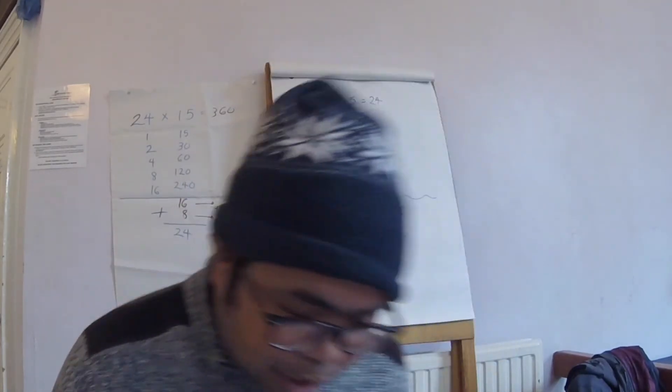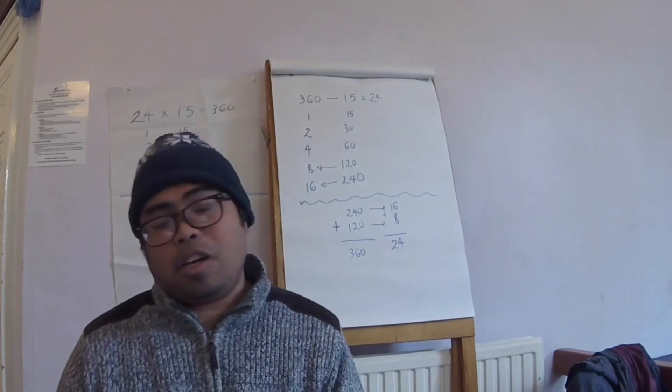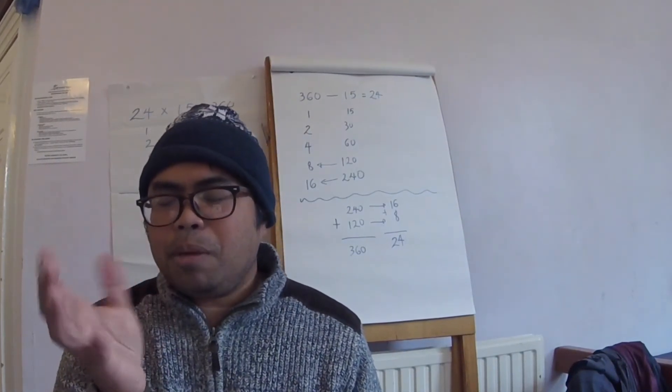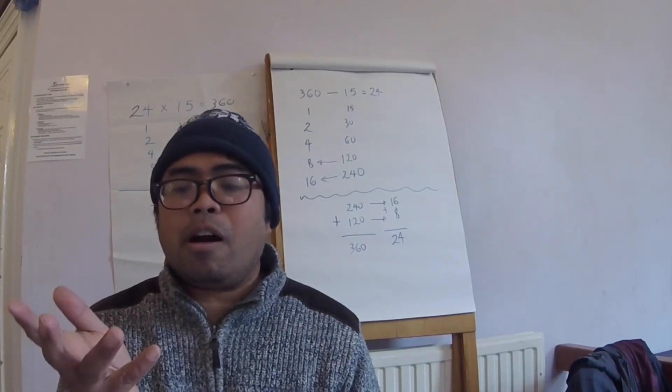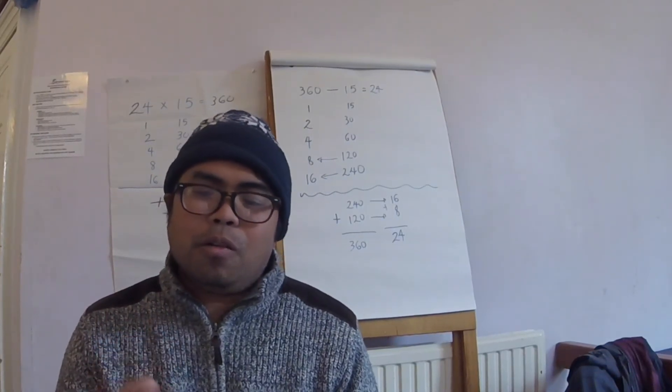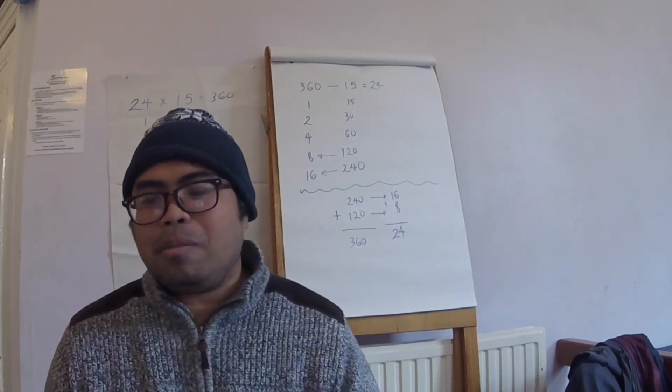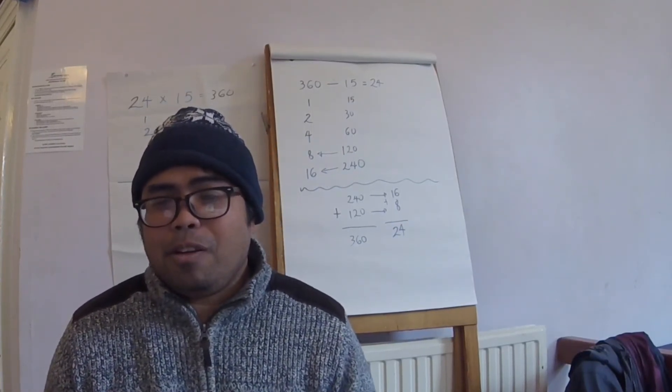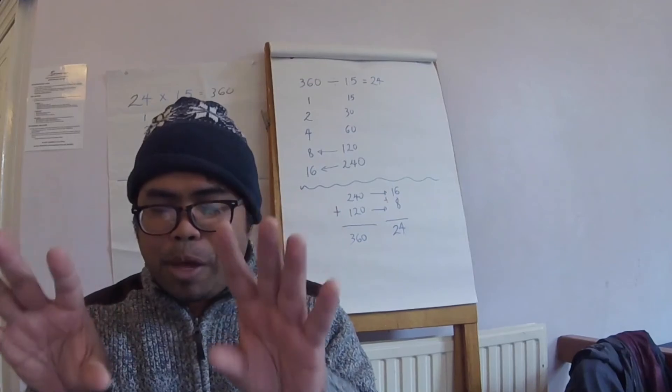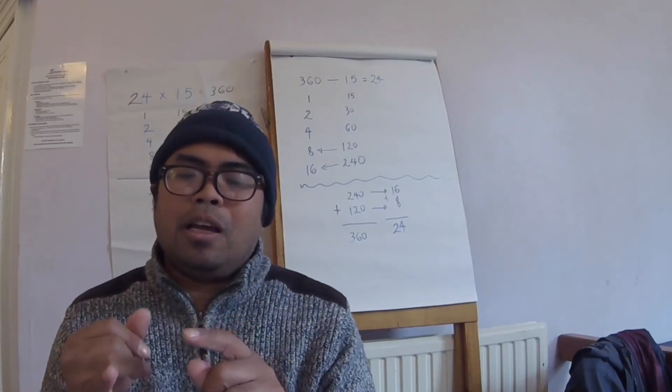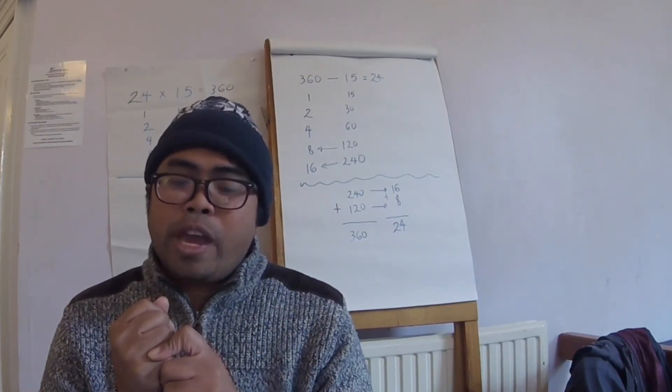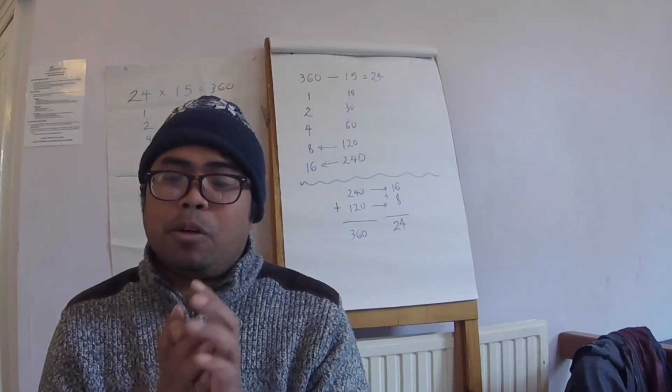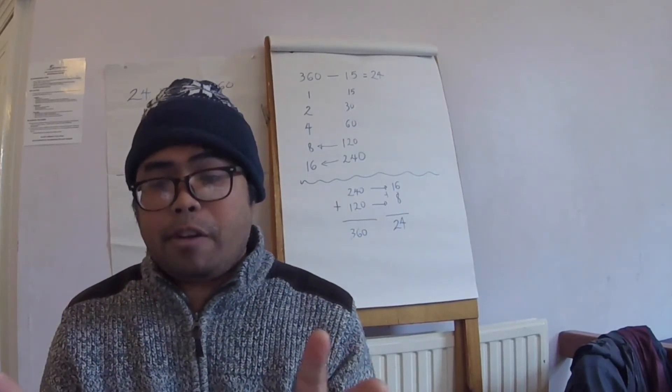And so in ancient Egypt, division is the mirror of multiplication. Now how do you compare that to the modern methods? If you look at how it looks on paper, the methods in the modern way of computing, of doing multiplication and division, they are completely different. There's no similarities.